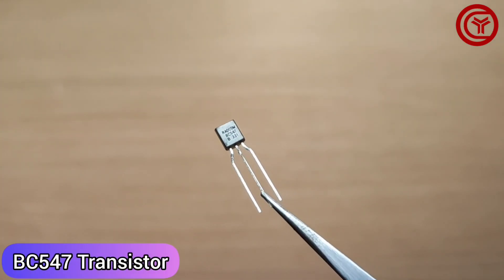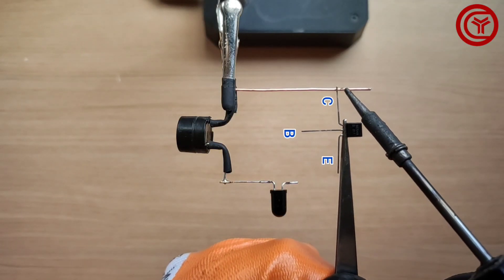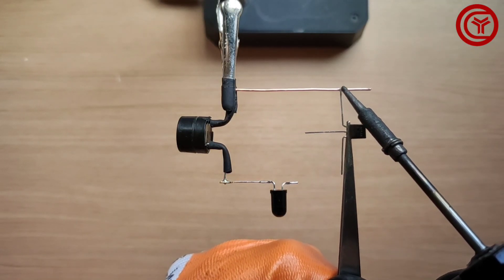Now take a BC547 NPN transistor. Solder the collector pin on the copper wire connected to buzzer negative.